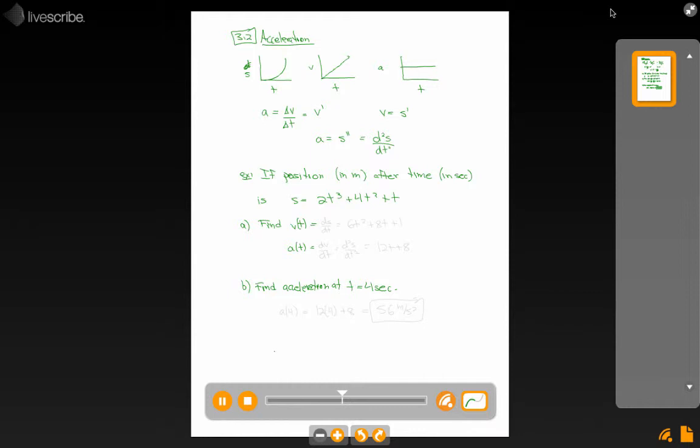An example is this: position is given by 2t³ plus 4t² plus t. Find V of t. Well, we know that's ds by dt, and so it's going to be 6t² plus 8t plus 1. The acceleration is just the derivative of that, the second derivative of position, which is 12t plus 8.